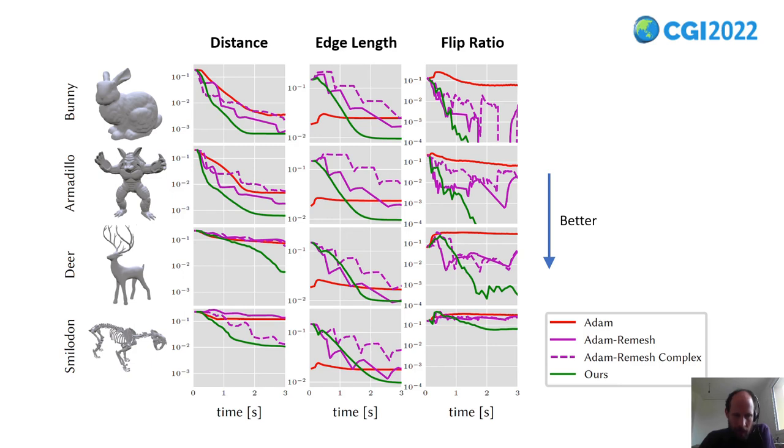Here you can see the comparison in more detail. The first column, this is the numbers that we have seen in the overview—the root mean square distance. Lower values are of course better. In the second column, you can see the mean edge length of the triangle mesh. And the green line, which is again our method, are much smoother. This is because we continuously decrease the edge length.